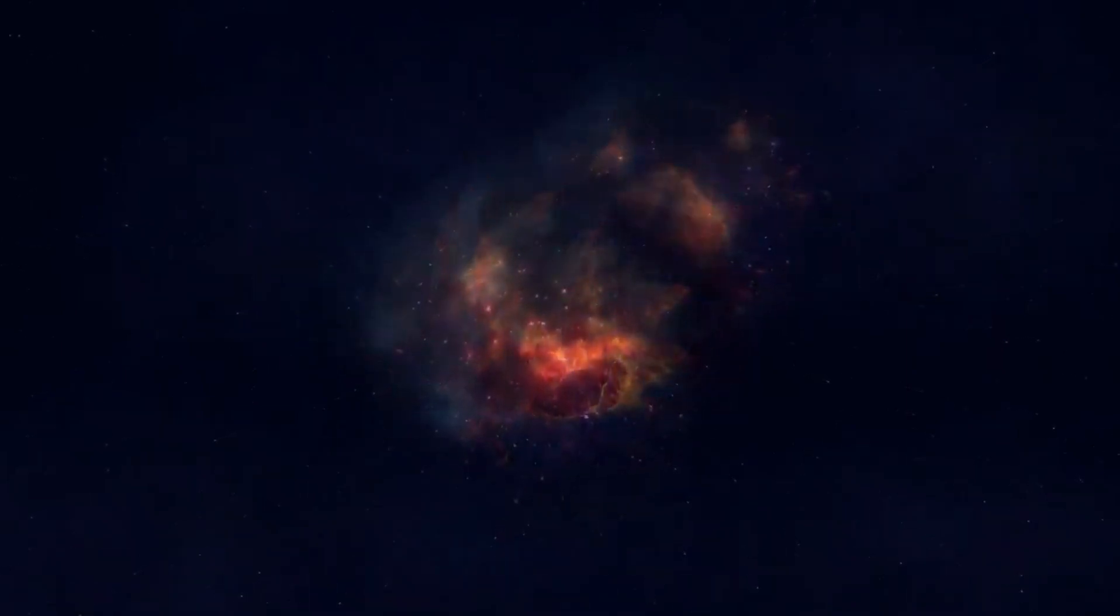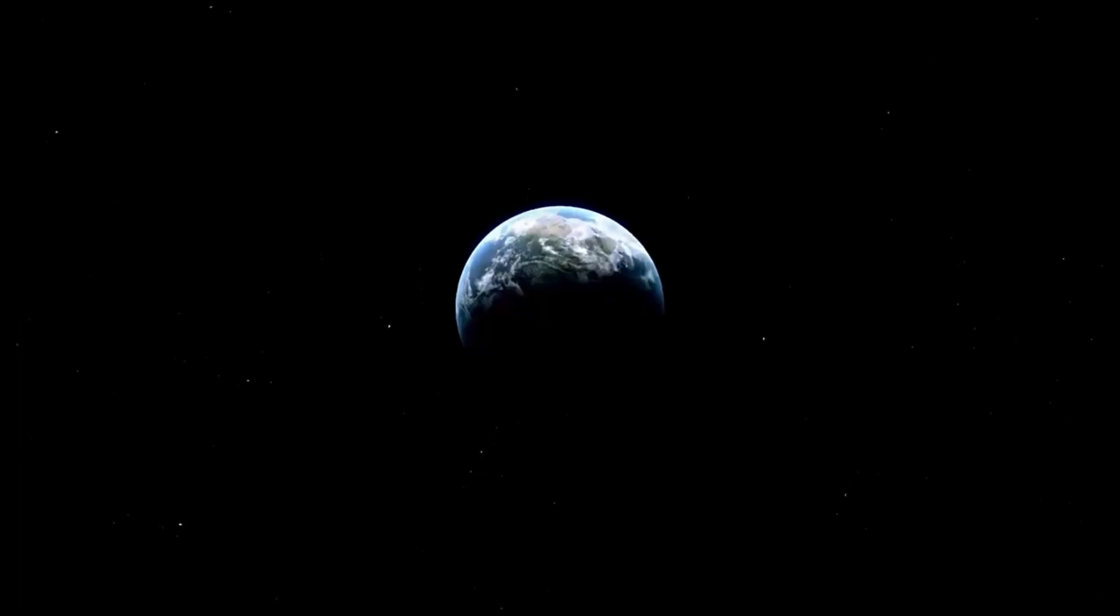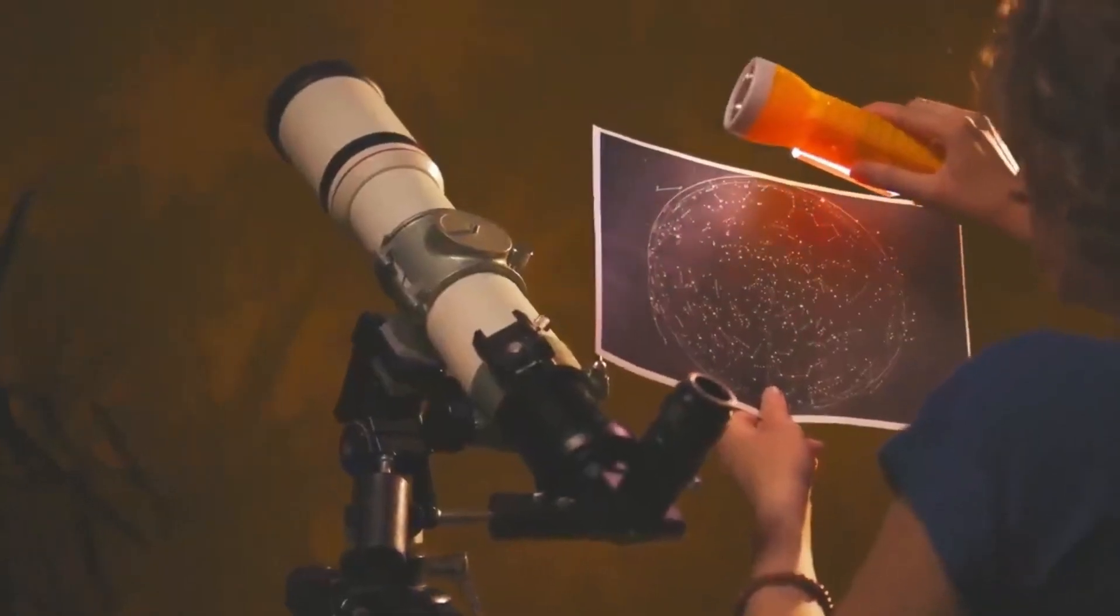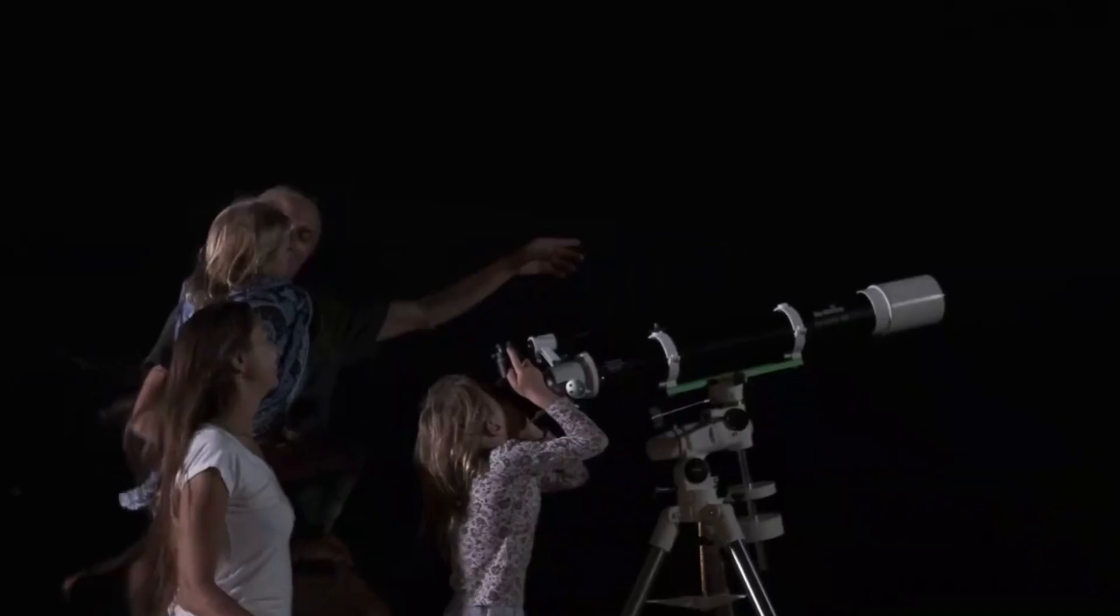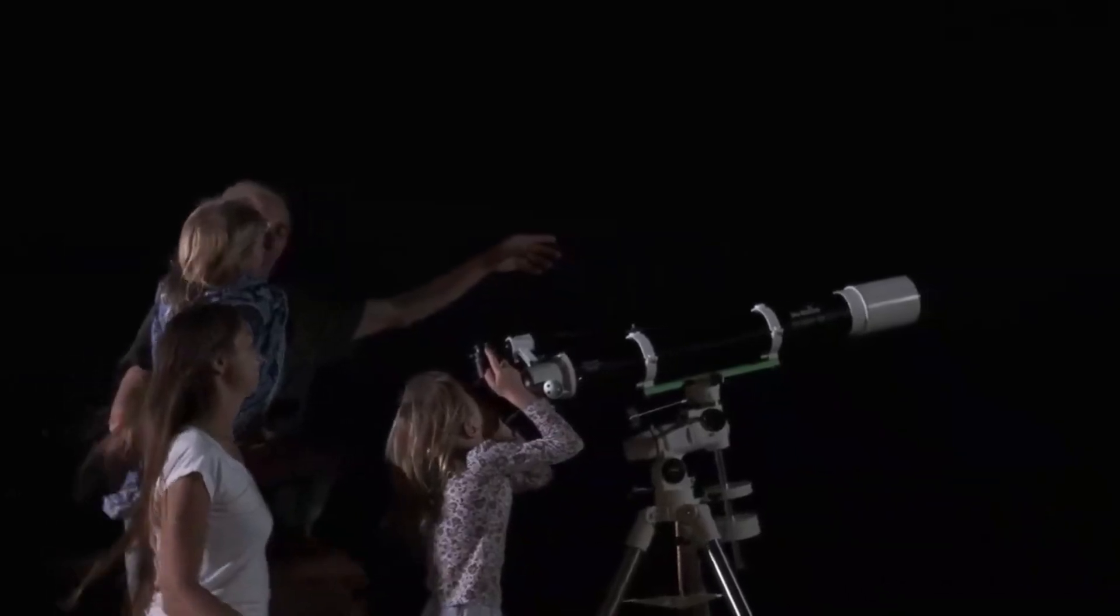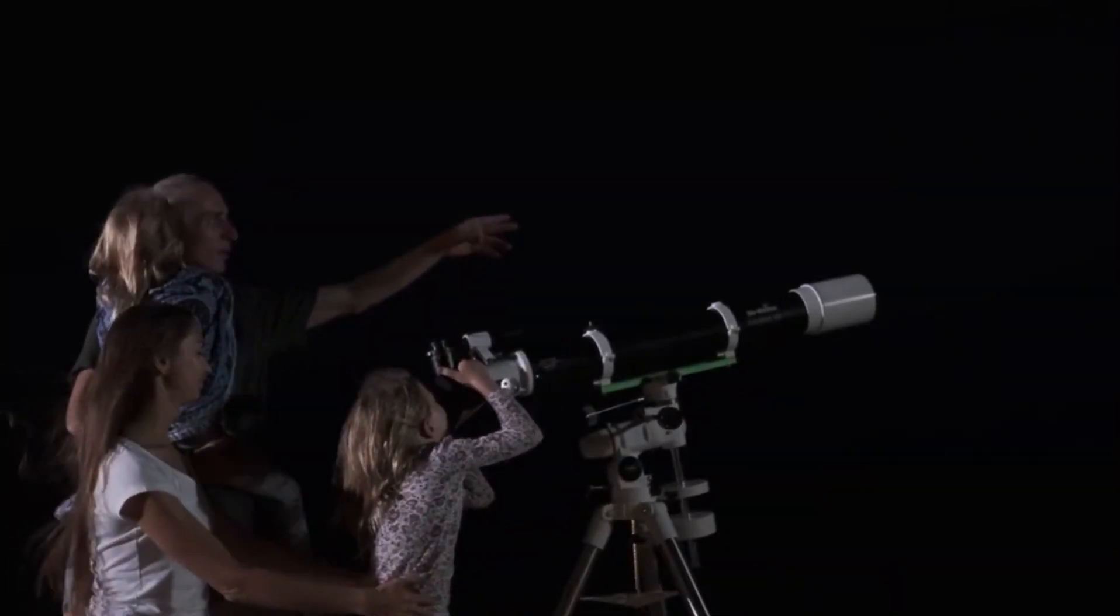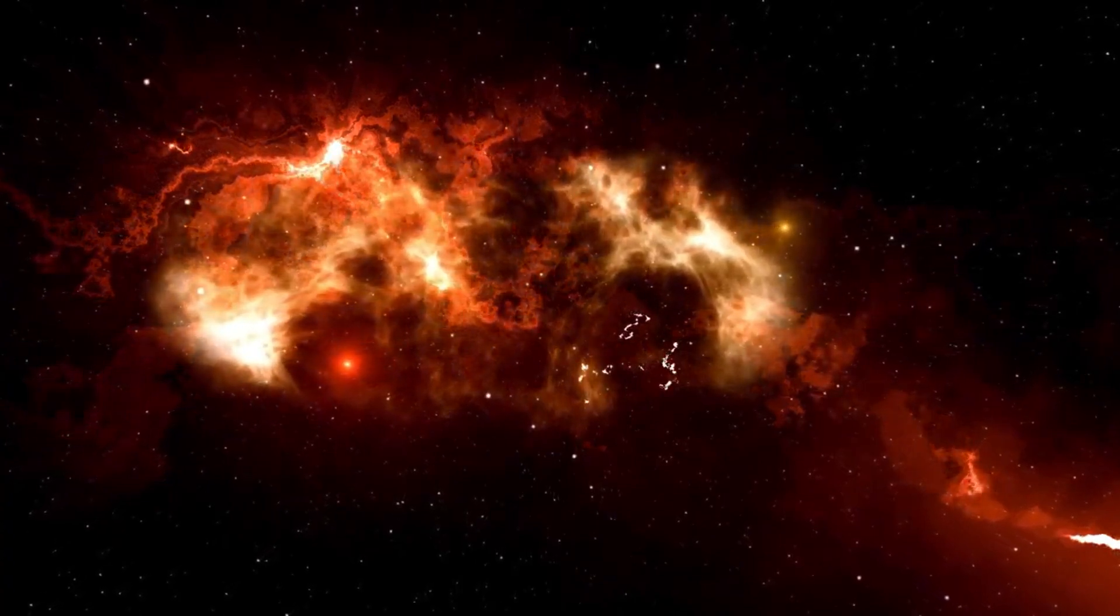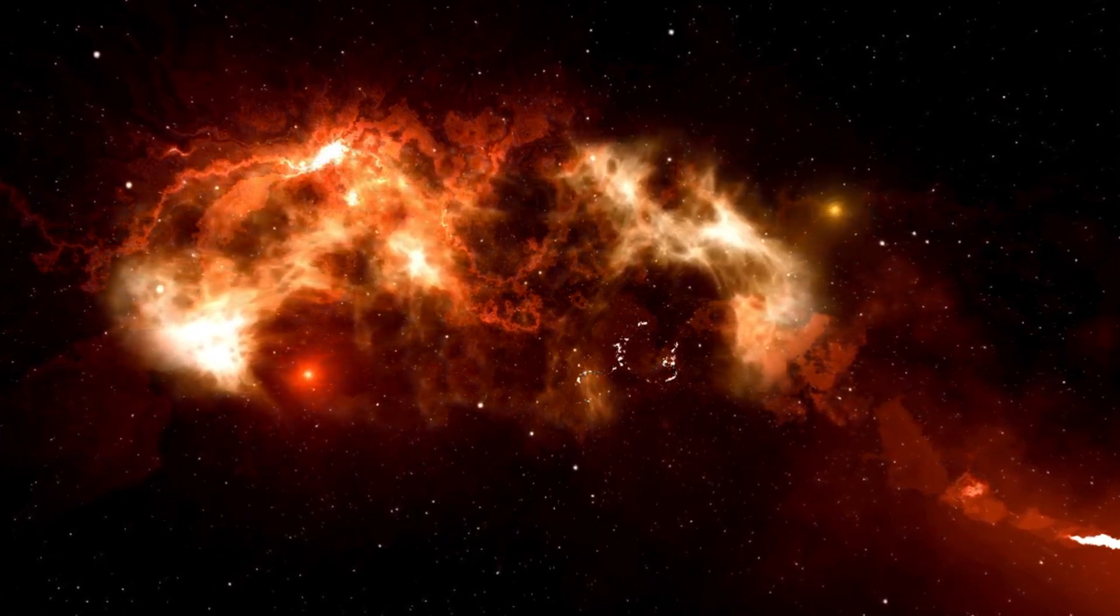But the supernova of Betelgeuse would not be without risks. While the star is far enough away that the explosion would not pose a direct threat to Earth, the intense radiation and cosmic rays emitted by the supernova could have an impact on our planet's atmosphere. Some scientists have speculated that a nearby supernova could deplete the ozone layer, increasing the amount of harmful ultraviolet radiation reaching the Earth's surface. However, the likelihood of such an event is low, and the scientific community is more focused on the potential benefits of observing a supernova up close.